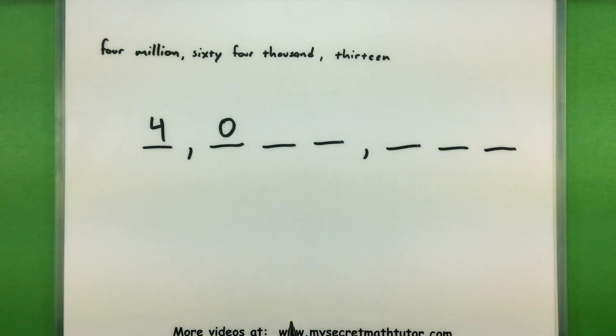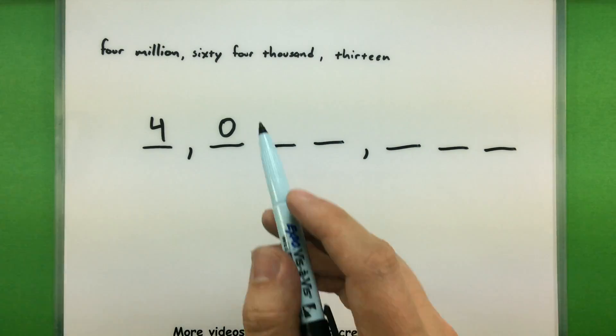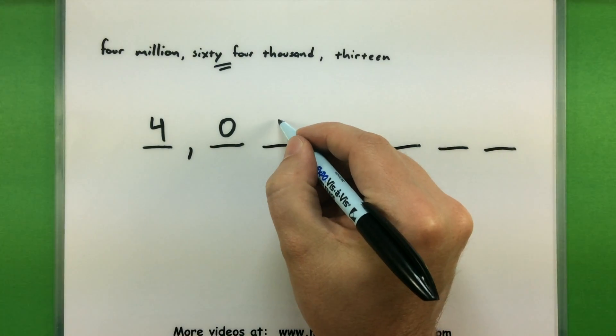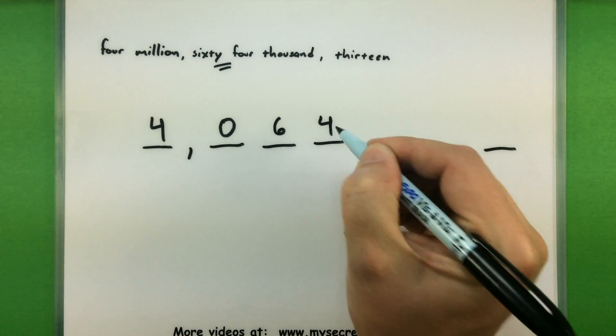Alright, now on to 64 thousands. Well, it looks like it doesn't identify any ten thousands. It's really just talking about the thousands place. But here you can see another one of those instances, 64 really takes up two place values. So I have 64 thousands.